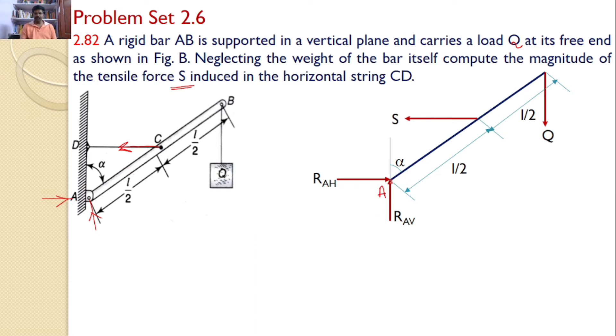If you take the moments about point A, RAH and RAV will not introduce any moment because both forces are passing through point A. Now, S will introduce a moment and Q will introduce a moment. Q will introduce the clockwise moment and S will introduce the counterclockwise moment.